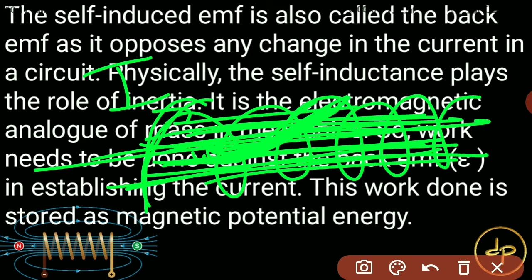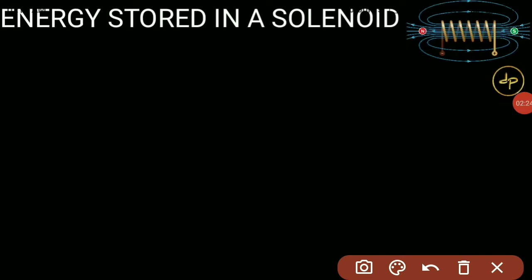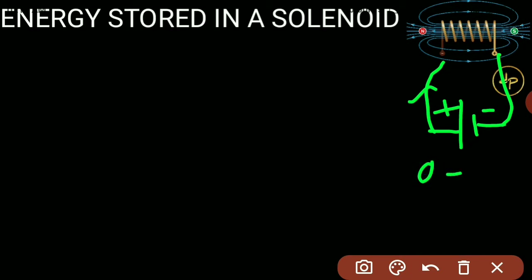We will find the expression for how much energy is stored when a current is established. Suppose in this solenoid there is a supply battery, and when it is switched on, it will send current from 0 to I, finally reaching a full current capital I. So the current will be increasing. Suppose at a moment the current is I in this solenoid.